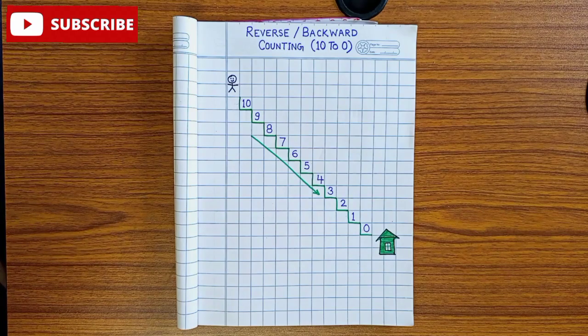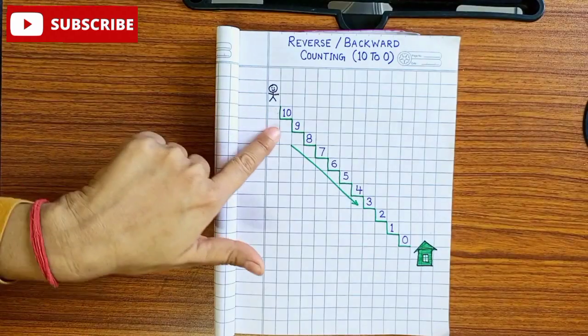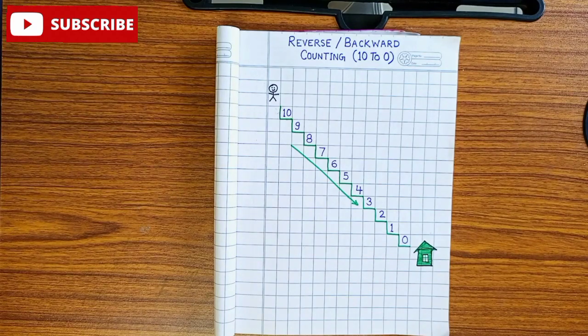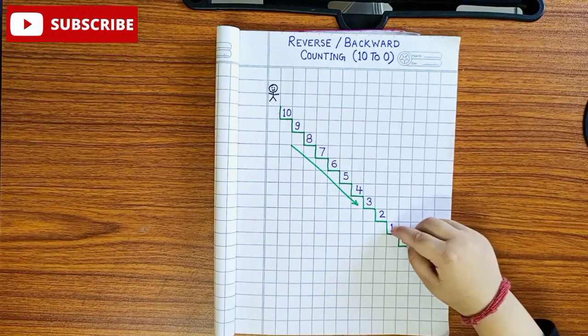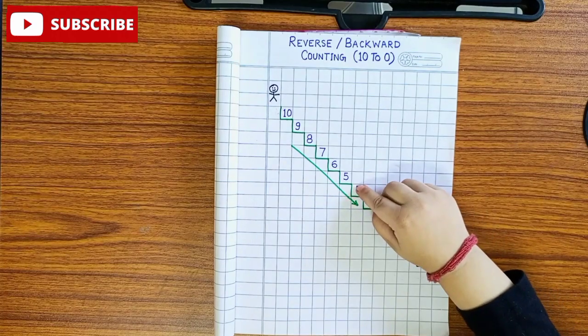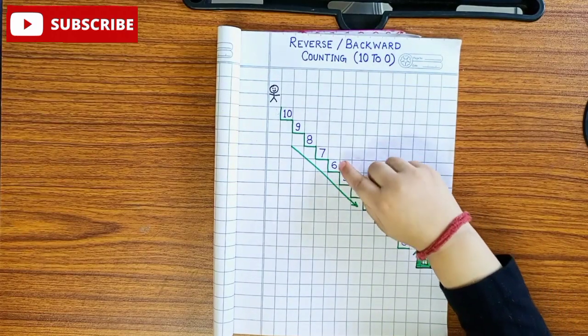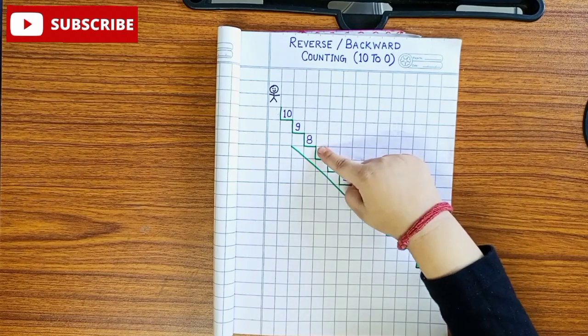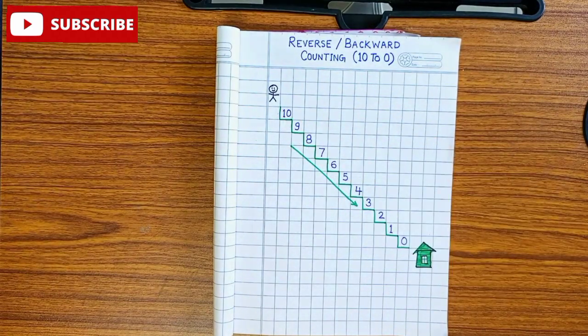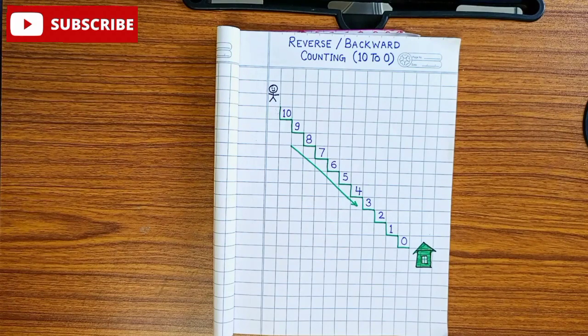Okay. Look here, these are stairs. Can you count these stairs? 0, 1, 2, 3, 4, 5, 6, 7, 8, 9, 10. 10 stairs are there.